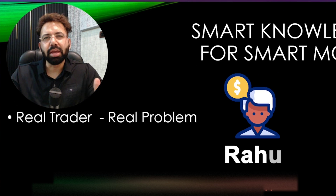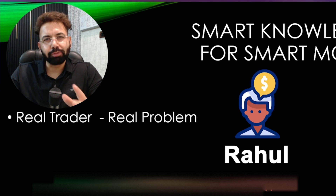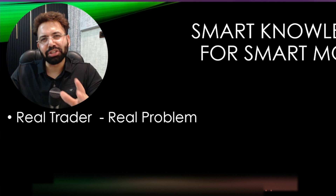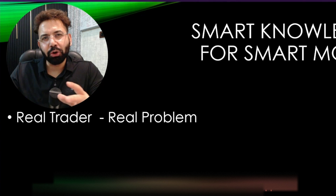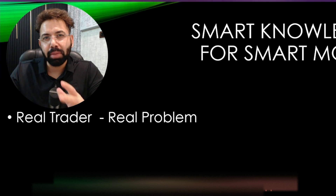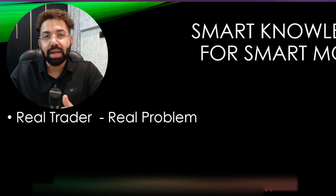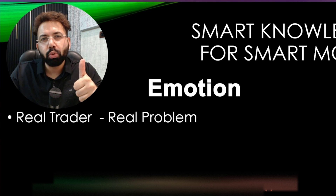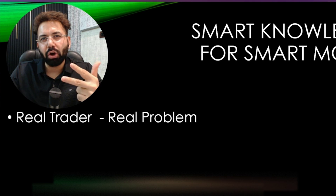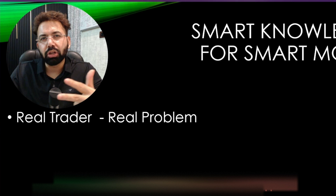Let's assume an option trader named Rahul. This person has been doing option buying for quite some time and he has a setup. On Monday, he has around 3 lakh rupees in his DMAT and starts option buying. Emotions take over and very fast his trading becomes revenge trading. In a matter of a couple of days, 3 lakh becomes 1 lakh, and then by the end of the week, 1 lakh becomes 20,000. Why? Because the number one problem everybody faces is emotional control.